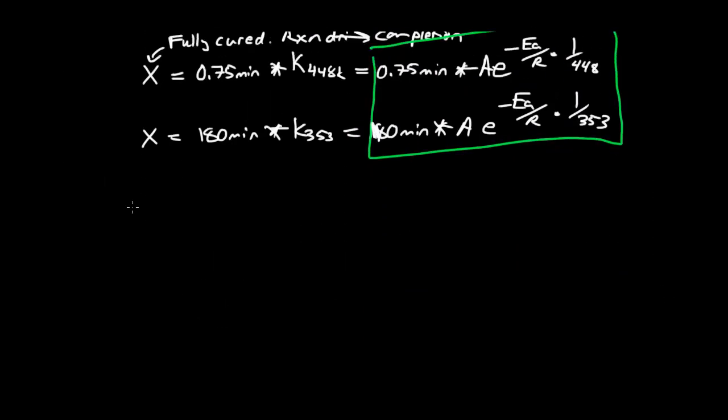Just scroll down. We know that 0.75 times A times e to the minus Ea over R times 1 over 448 equals 180 times A e to the minus Ea over R times 1 over 353.